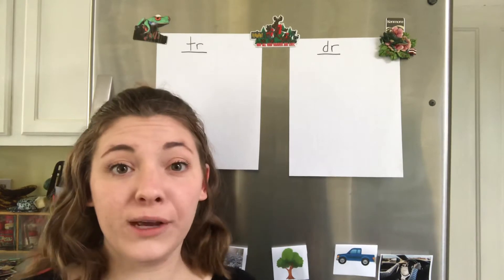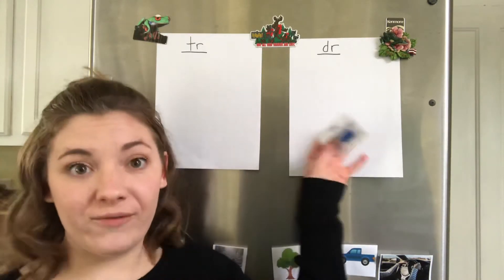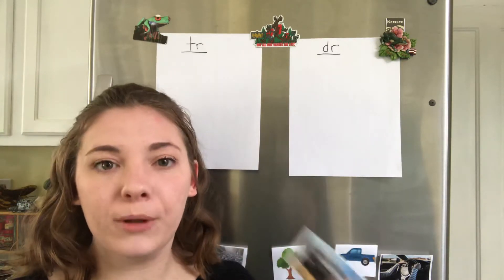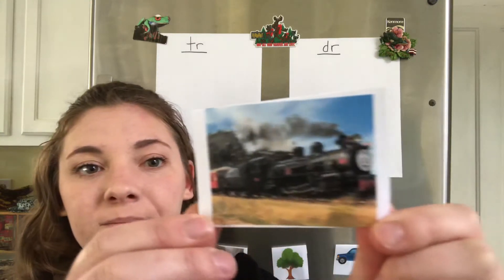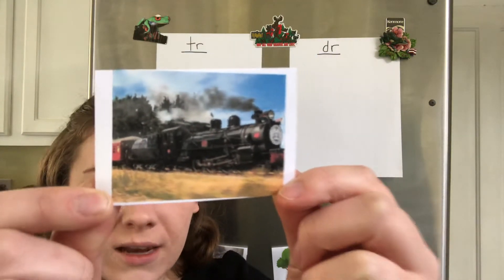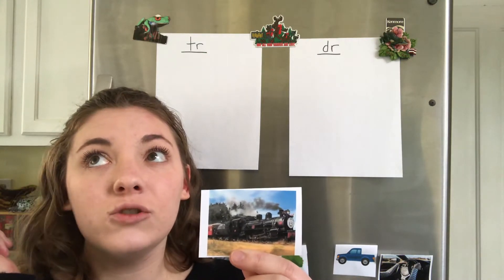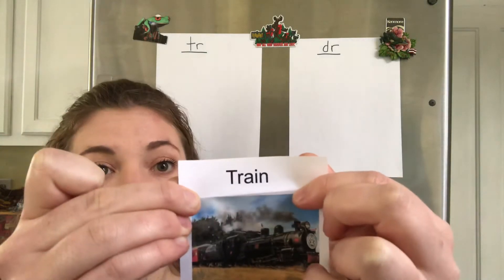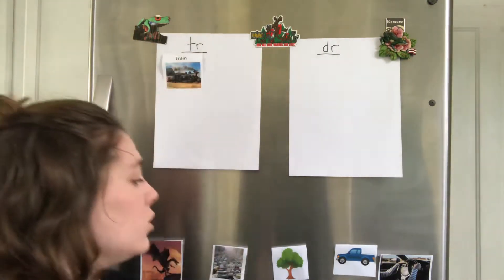So what we're gonna be working on is identifying different words that have these prefixes, either DR or TR. And then we're gonna decide which word belongs with which prefix. So let's start with this. This is a picture of a train. Train. Think about it — listen to the beginning. TR begins with TR, so I'm gonna put it on the TR side. Train.